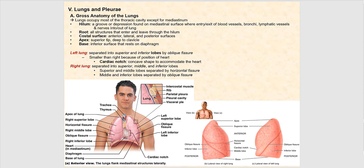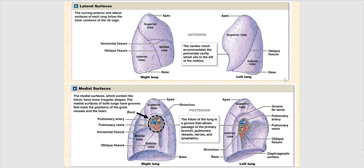The hilum is a groove or depression found on what's referred to as the mediastinal surface. This is where blood vessels enter and leave — for example, your pulmonary arteries, your pulmonary veins, as well as the primary bronchus. So that's a groove or a depression.